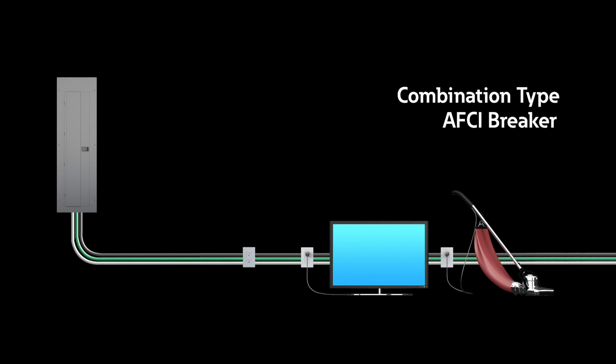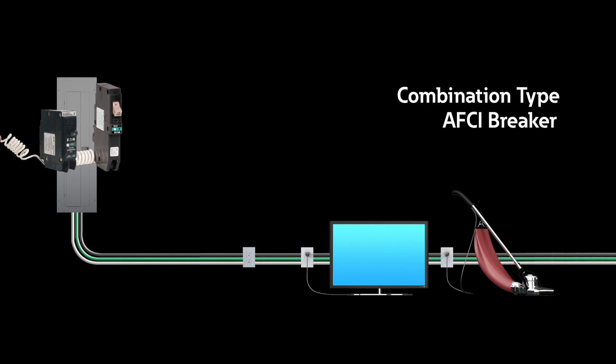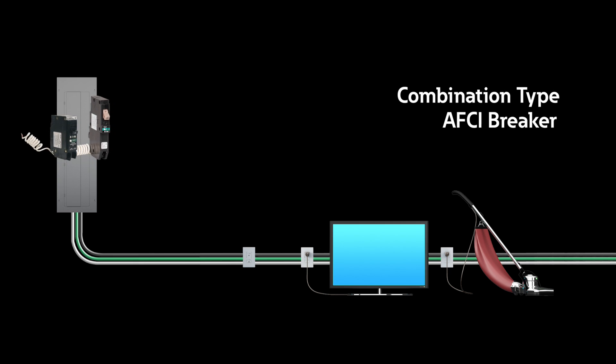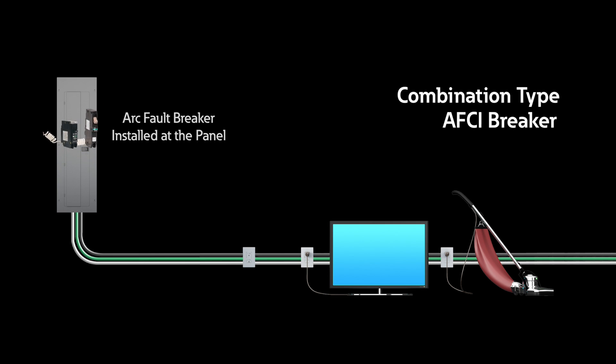Combination type AFCI breaker. This is the most common and most complete way to provide AFCI protection. It is installed at the panel and safely detects both parallel and series arcs in the entire branch circuit, including the home run circuit and downstream out through the connected cords.